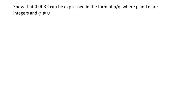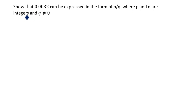Hi friends, welcome to my channel Excellent Ideas in Education. Today we are going to solve this problem: show that 0.0032 bar — where only two digits are repeating — can be expressed in the form of p by q, where p and q are integers and q is not equal to zero.